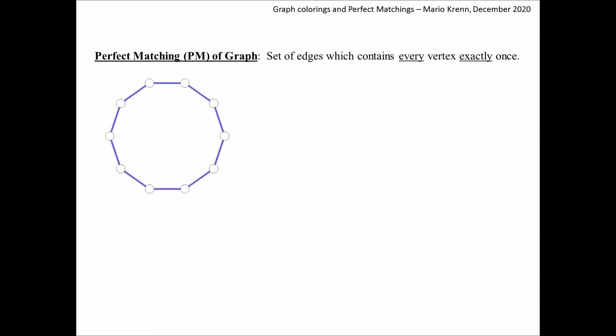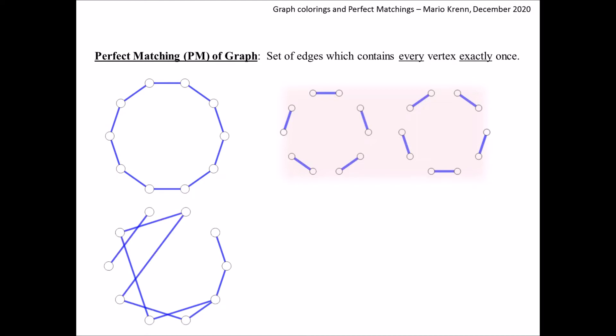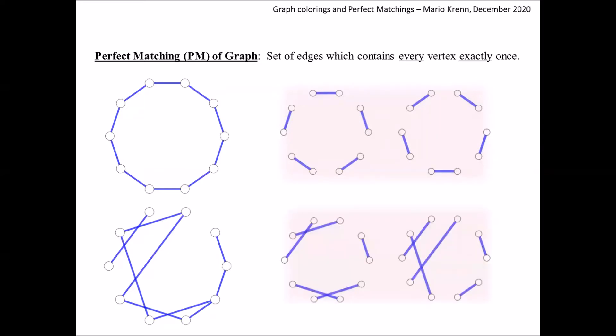The first concept we need are perfect matchings. A perfect matching is a set of edges which contains every vertex exactly once. Let's take this graph as an example — it has two perfect matchings, and in each of them the edges contain every vertex exactly once. Let's look at a second example; it can be a bit tricky to find all of the perfect matchings. Here they are, and it is a good exercise to convince yourself that these are actually the only ones.